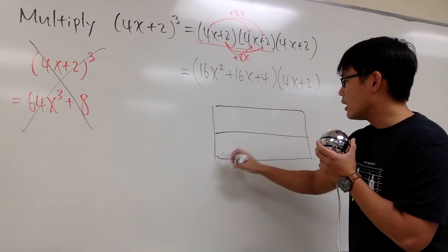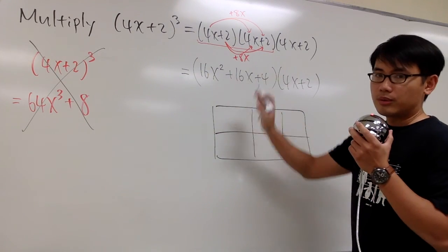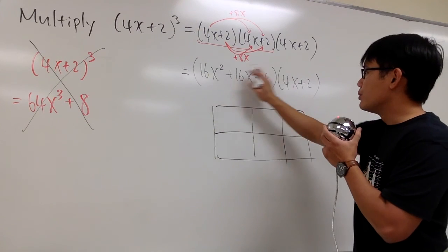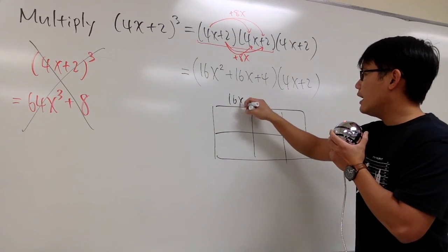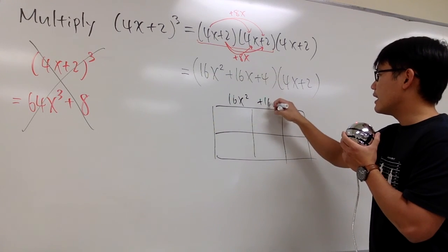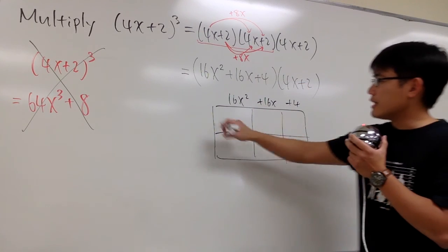I'm just going to draw a box, and on the top, I'm going to cut into 3 pieces, I'm going to put the first parentheses right here, 16x squared, plus 16x, plus 4, and then I'll put down 4x plus 2 on the side.